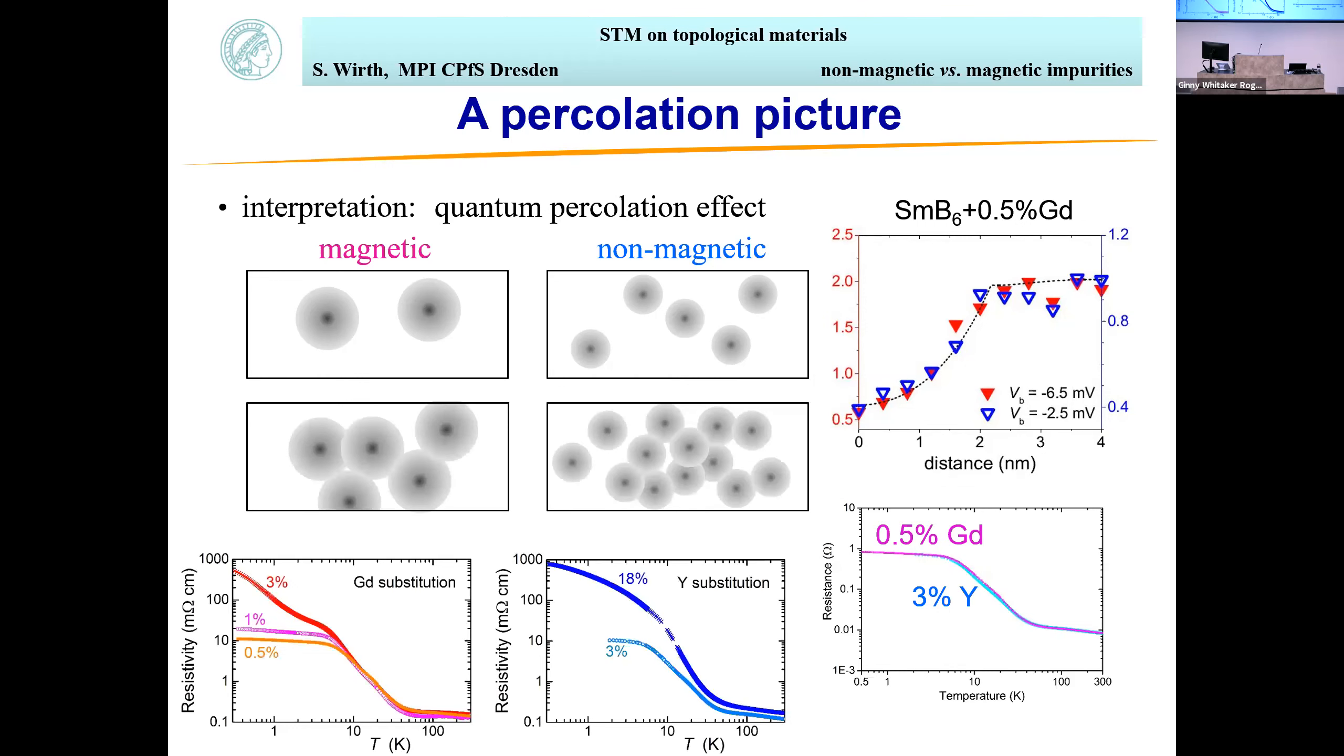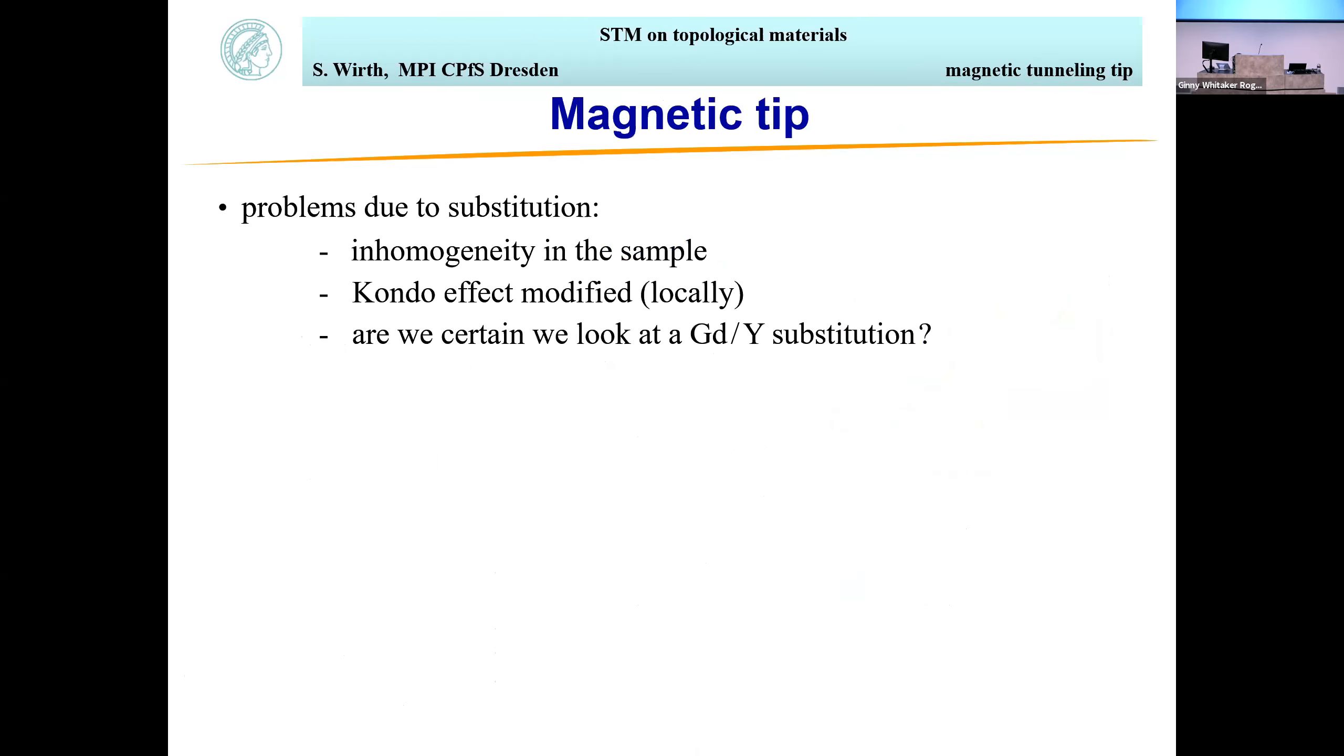You can put in more non-magnetic impurities because they aren't destroying the surface state over such a large area. If you go higher in doping, at some point you destroy the percolating path and don't see saturation anymore. It happens at 3% gadolinium doping. For non-magnetic doping, you would need 12-13%. The sample we have is 18% and shows no saturation. But you see a problem with this approach. How do we know we're not playing with the underlying Kondo effect by doping, at least locally? We certainly introduce inhomogeneity. Are we actually certain we're looking at the impurity we think we are?